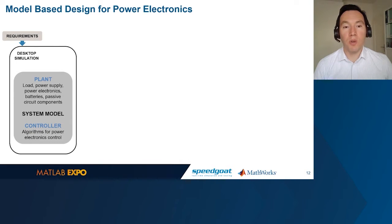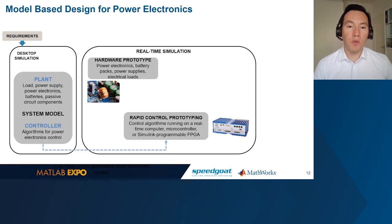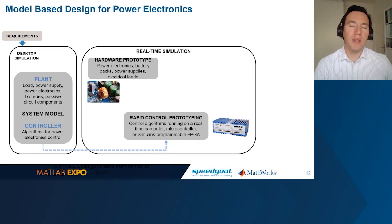Our ultimate goal will be to connect our controller to the hardware prototype. So as a first step, we can generate code from the controller to a SpeedGoat target machine for rapid controller prototyping. SpeedGoat target machines are expressly designed for tuning, testing, and deploying controllers directly from Simulink. We can easily adjust parameters to support automatic PID tuning and data logging.